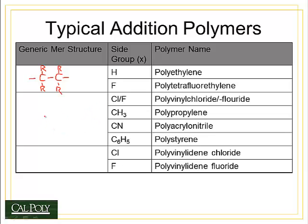For slightly more complex mers, you have carbon bonded to carbon with hydrogen atoms coming off in most cases, except for one side group which is an R group. That R might be a chlorine or fluorine atom, a methyl group leading to polypropylene, a cyanide group leading to polyacrylonitrile, or a benzyl group leading to polystyrene.